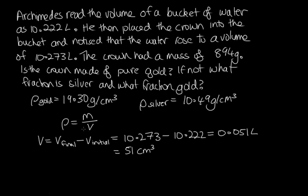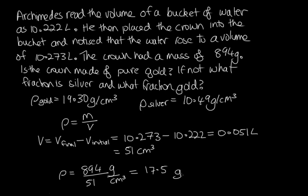We've now got the volume, so we can get the density. The density equals 894 grams over 51 centimetres cubed, which gives us a density of 17.5 grams per centimetre cubed. This is less than the density of gold, so this tells us the crown is not made of pure gold.